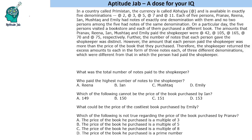First of all, we must understand that the amount paid will be the denomination of the note multiplied by the number of notes. We are given that these are different for 5 people across 5 different types, and the number of notes is also different. So let us use this logic to find out the type and number of notes.